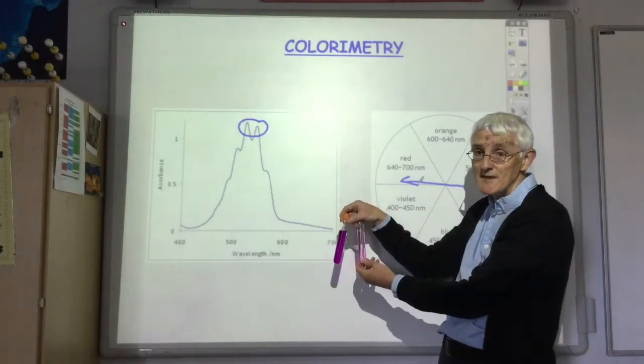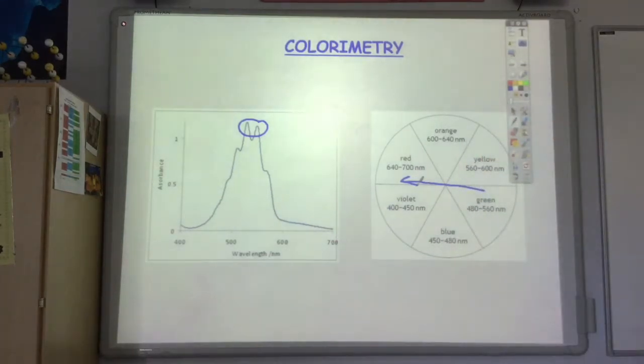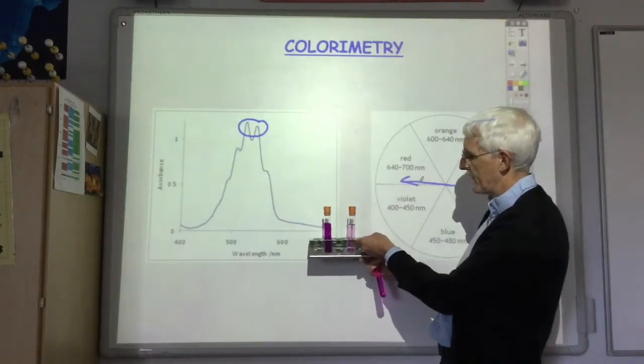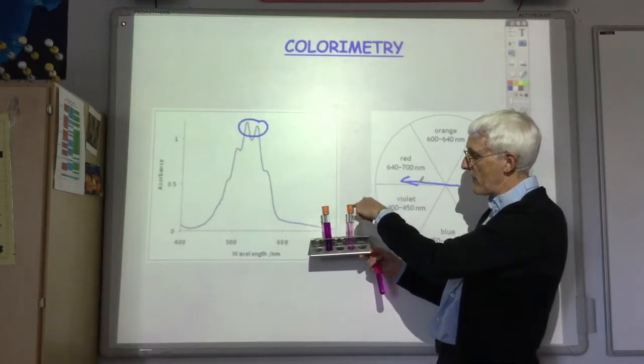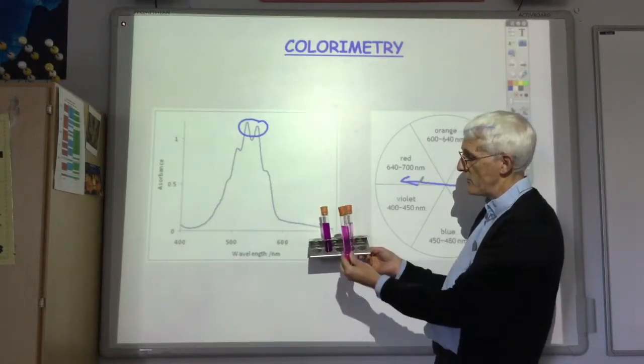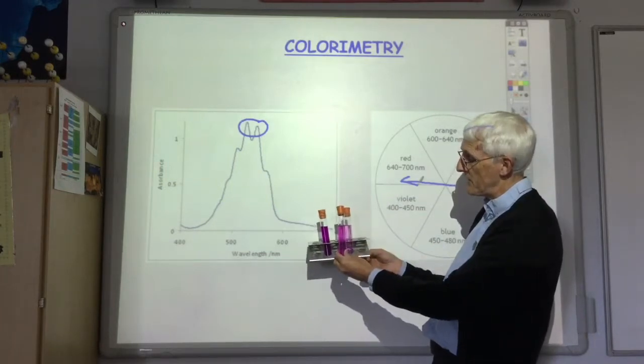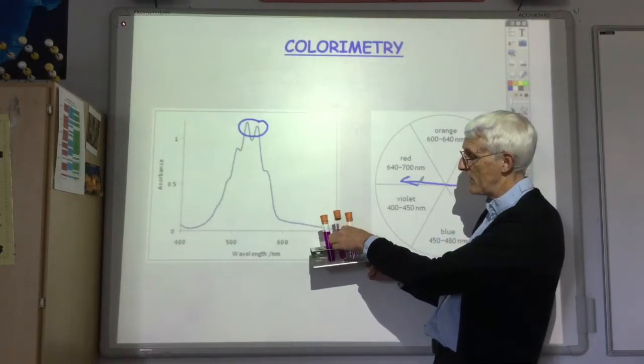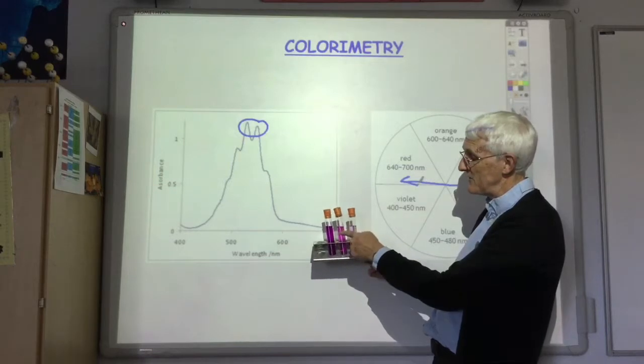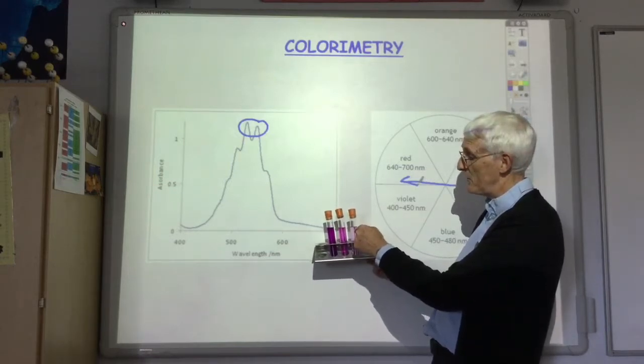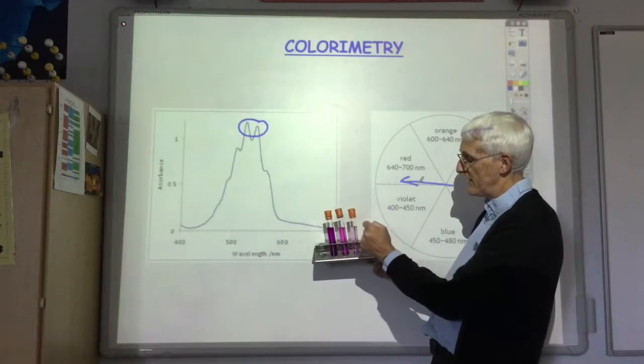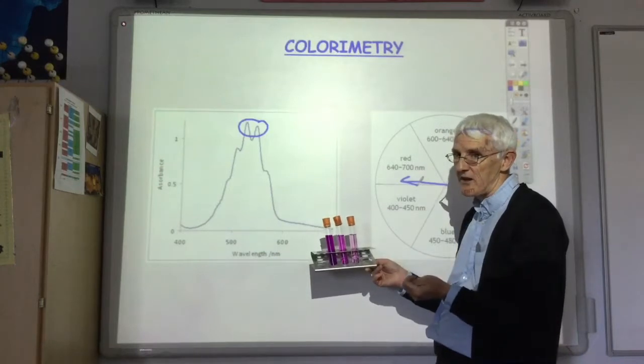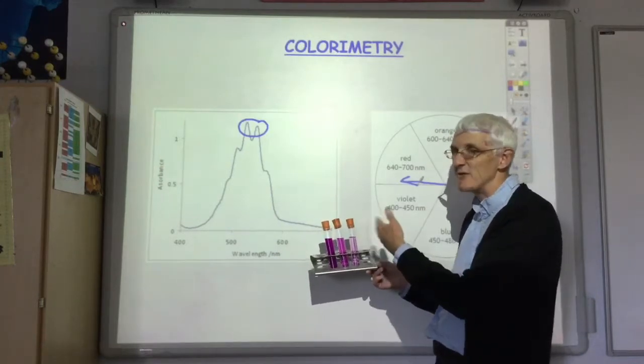So if we then take an unknown sample, here we've got our 1 mole per liter, here we've got our 0.1 mole per liter, and here's our unknown sample. The unknown sample has got a more intense color than the 0.1, but not as intense as the 1 mole per liter. So the concentration of our unknown sample lies somewhere in between 0.1 and 1 mole per liter, perhaps 0.5 moles per liter. That's the basic idea of colorimetry, although an instrument is used to make the measurements far more precise.